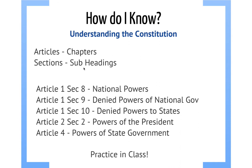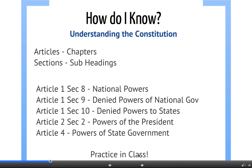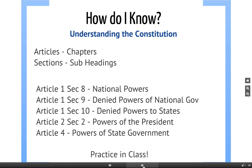Article 1, Section 8 lists the jobs that the national government has. Article 1, Section 9 covers things the national government can't do. Article 1, Section 10 denies powers to state government. Article 2, Section 2 tells about what the president can do. And Article 4 is all about what state government can do. You can see exactly what state and national government can and cannot do in these articles, and we'll be practicing this in class.